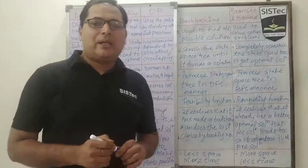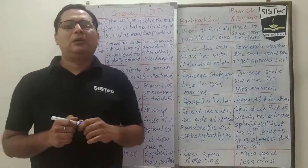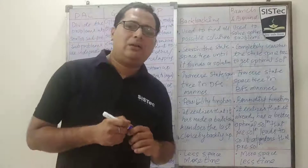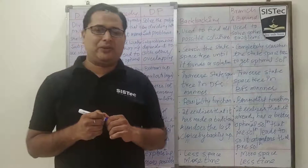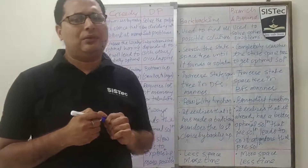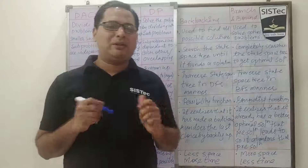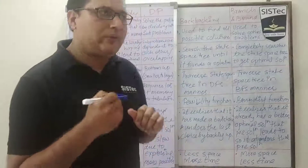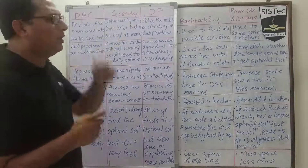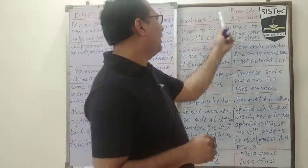Hello guys. As we have covered all problem solving strategies till now, let's have the comparison between all the problem solving strategies. It is very important for university examination point of views as well as for conceptual understanding for competitive examination questions. First we'll discuss the comparison between divide and conquer, greedy and dynamic programming, and then in the second part we'll discuss the comparison between backtracking and branch and bound.